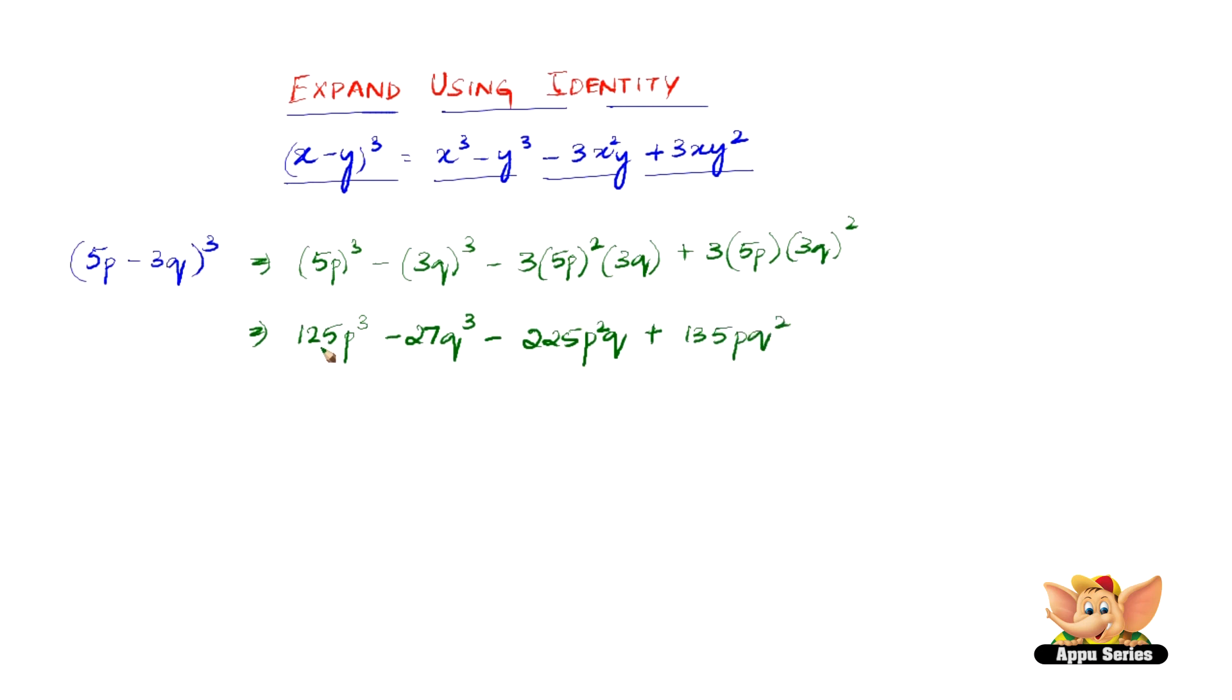Therefore, 125p³ - 27q³ - 225p²q + 135pq² is the expansion of (5p - 3q)³.